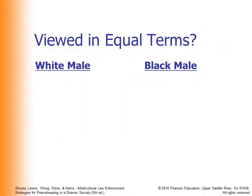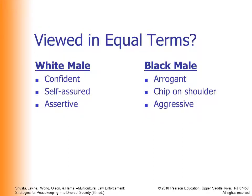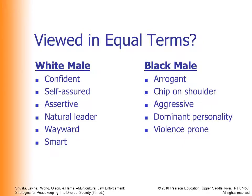Are Black males and white males viewed in equal terms? If a white male is confident, a Black male displaying the same attitude is called arrogant. If a white male is self-assured, a Black male is said to have a chip on his shoulder. If a white male is assertive, a Black male is called aggressive. A white male is a natural leader; a Black male is a 'dominant personality.' A white male is a 'wayward young man'; a Black male is 'violence-prone.' A white male is smart; a Black male is 'naturally gifted.' They are clearly not viewed in equal terms.